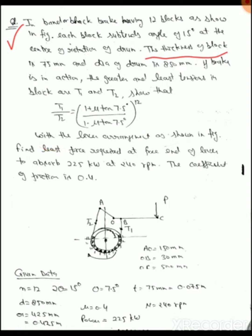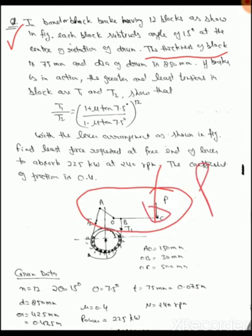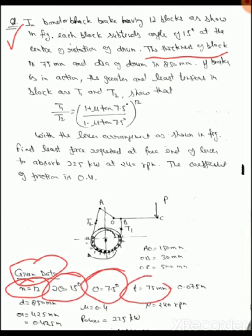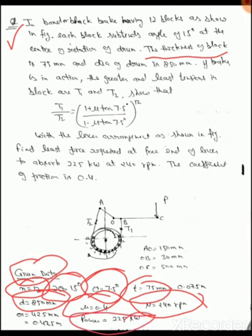From the lever arrangement shown in the figure, find the least force P required at the free end of the lever. The power absorbed is 225 kW, the wheel rotation is 240 rpm, and the coefficient of friction is 0.4. Given data summary: n = 12 blocks, 2θ = 15° so θ = 7.5°, block thickness = 75 mm, drum diameter = 850 mm, μ = 0.4, N = 240 rpm, power = 225 kW.